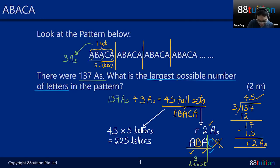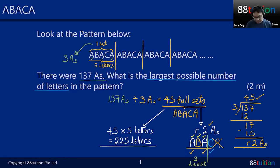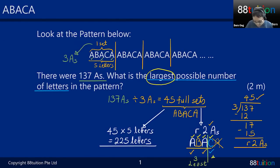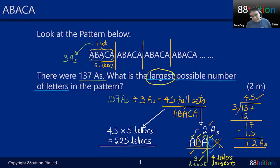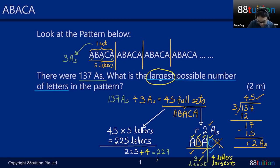So the 45 full sets give us 45 × 5 = 225 letters. Then for the remainder portion: the two A's are accounted for, the B must be present, and since we want the largest possible, the C is included as well — giving us four extra letters: A, B, A, C. So the final answer is 225 + 4 = 229 letters in total.